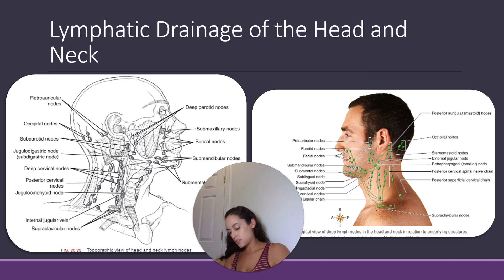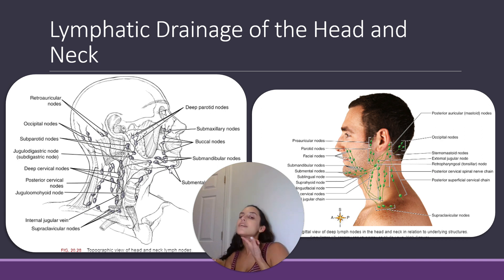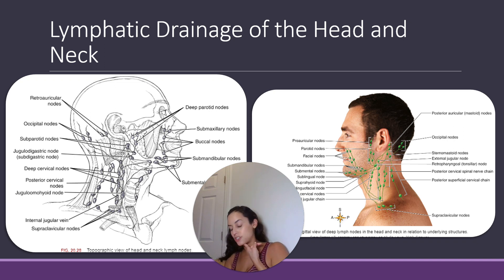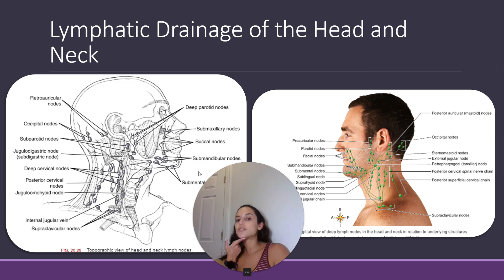Your submental lymph node is found in the submental triangle of the digastric muscles — these sit right under your chin, right under your tongue. They cover the areas of the digastric muscles, draining the tongue, the lower gums, the lips, the central floor of the mouth, and the skin of the chin. These provide efferent drainage to the submandibular nodes. So the submental nodes are more superficial, draining into the submandibular, which then drain into the deep cervical.